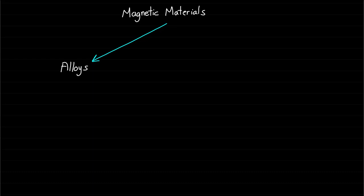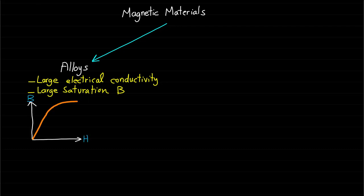These alloys have large electrical conductivity and large values of saturation magnetic field density B near to 1.8 tesla. Two types of loss are found in iron alloy materials: hysteresis and eddy current loss. These types of materials are usually used in low frequency applications below 2 kHz because of the eddy current loss.